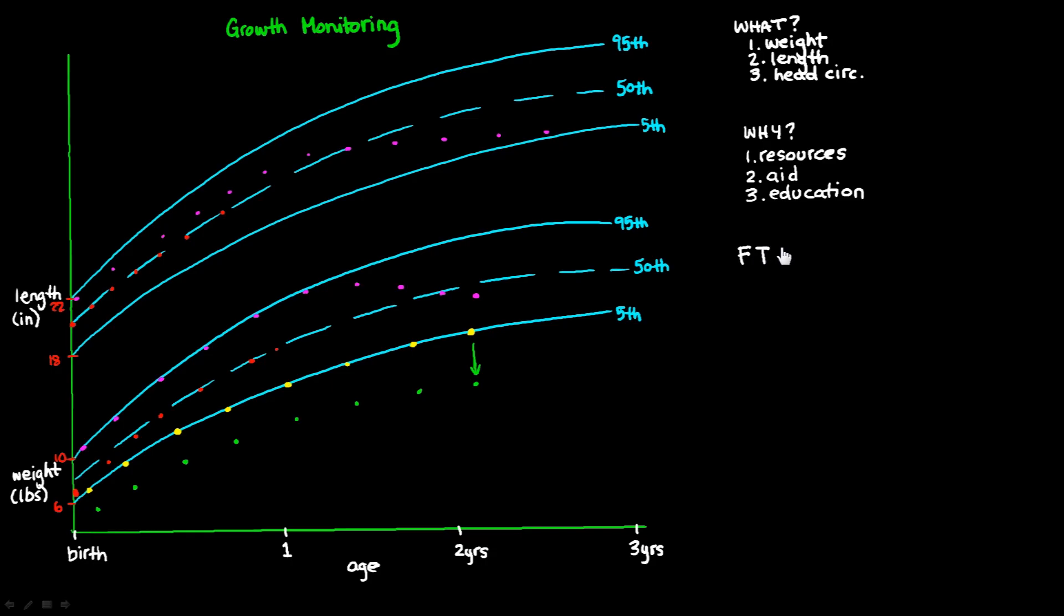So I use the term failure to thrive, and the abbreviation for that is just FTT. And failure to thrive, it's the term that we use to describe a child who has a concerning profile on one of these growth monitoring charts. So for example, a child who's acutely falling off, or a child who's growth stunted. And failure to thrive has two origins. Firstly, we talk about organic failure to thrive. And organic failure to thrive occurs when there's something physiologically wrong with the child, where they are unable to make use of the nutrients that they're taking into their body. Maybe they're unable to digest the nutrients, or they're unable to absorb them. But for some reason, the nutrients aren't getting to the tissues to help the body grow.